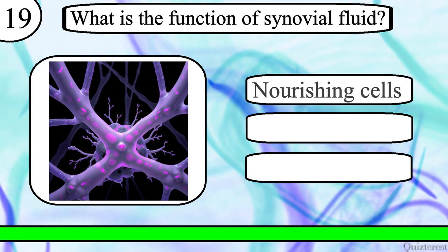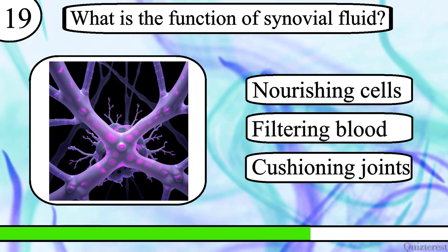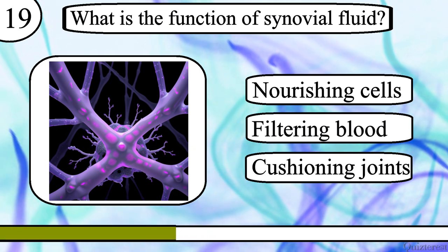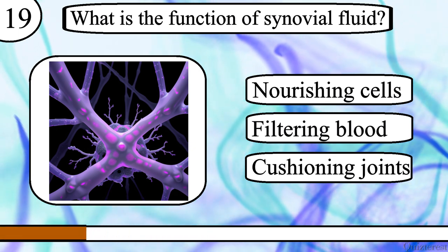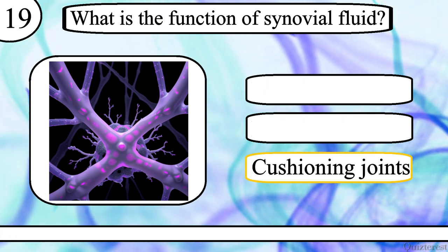Question 19. What is the primary function of synovial fluid? Nourishing cells, filtering blood or cushioning joints? The correct answer is cushioning joints.